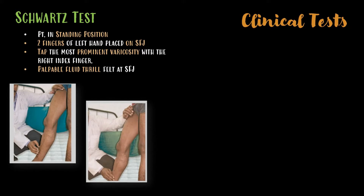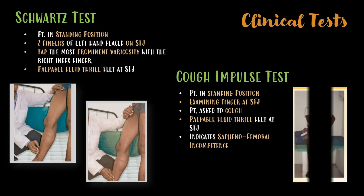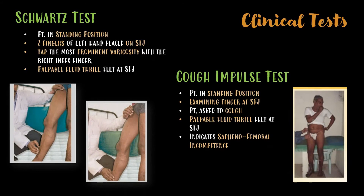Another clinical test is the cough impulse test, where the patient is in standing position and the examining finger is placed at the saphenofemoral junction. The patient is asked to cough and a palpable fluid thrill is felt at the saphenofemoral junction, which indicates saphenofemoral incompetence.